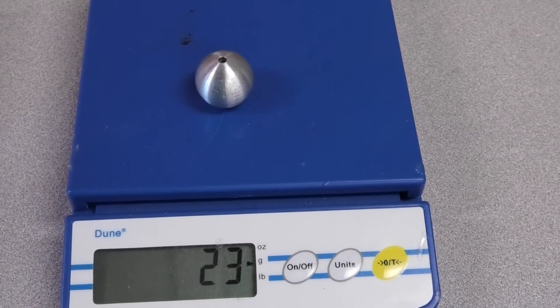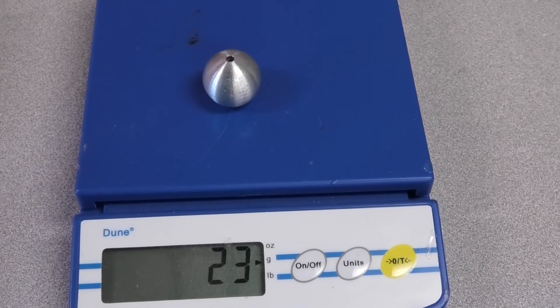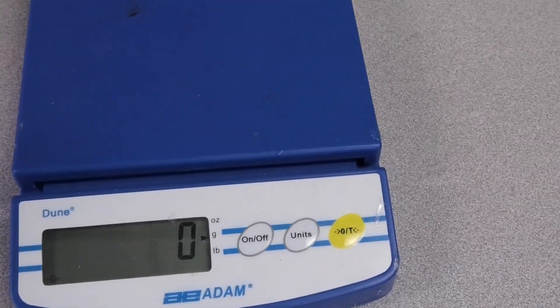The aluminum is much, much lighter in terms of mass. It comes out to be about 23 grams. Next is the steel.